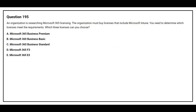Question number 195. An organization is researching Microsoft 365 licensing. The organization must buy licenses that include Microsoft Intune. You need to determine which licenses meet the requirement. Which three licenses can you choose? Option A: Microsoft 365 Business Premium. Option B: Microsoft 365 Business Basic. Option C: Microsoft 365 Business Standard. Option D: Microsoft 365 F3. Option E: Microsoft 365 E3.